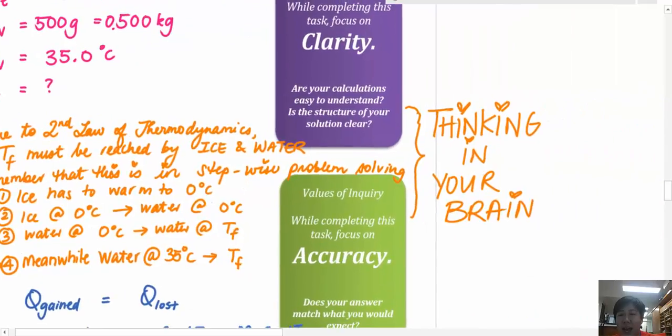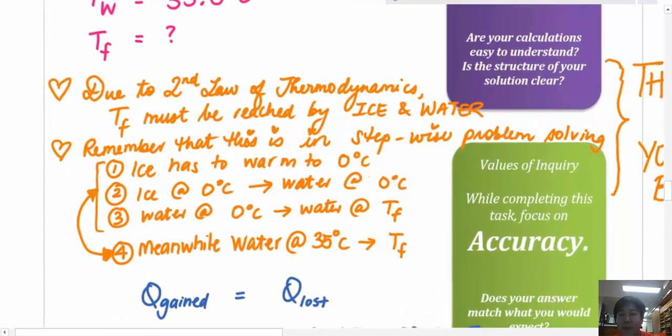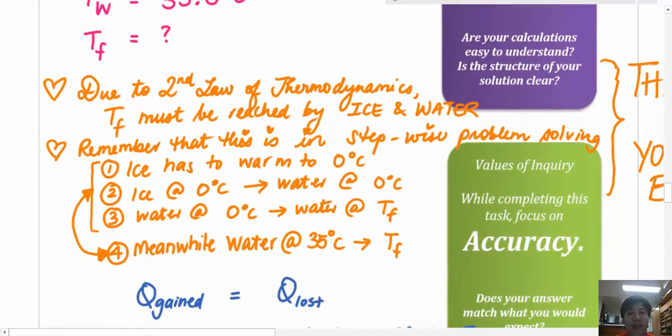It's kind of like a step-wise problem solving. The second part is you realize that there are three parts. What does the ice have to do? Well, the ice has to actually get up to zero degrees because it starts off down here at negative five. It has to get up to zero first. So that actually is a specific heat capacity problem.